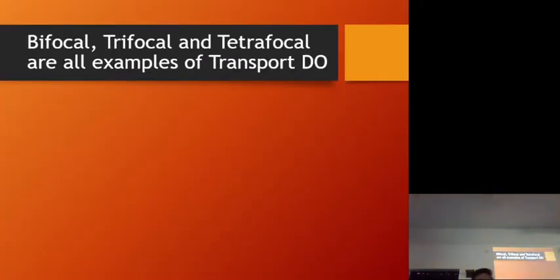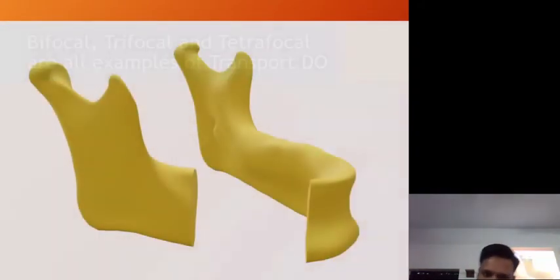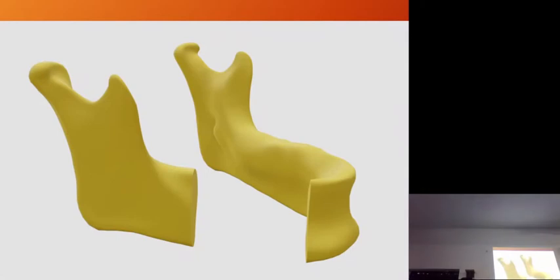Bifocal, trifocal, and tetrafocal are all examples of transport distraction. Suppose we have a huge defect in the mandible body region. We give an osteotomy cut and create a transport disc — this segment is called the transport disc.